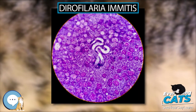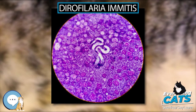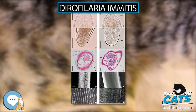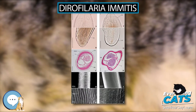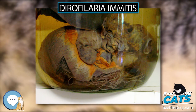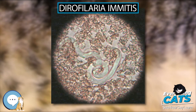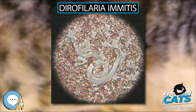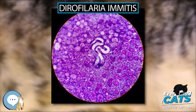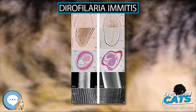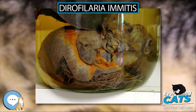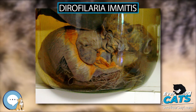Rarely, migrating heartworm larvae get lost and end up in aberrant sites such as the eye, brain, or an artery in the leg, resulting in unusual symptoms such as blindness, seizures, and lameness. Normally, until the larvae mature and congregate inside the heart, they produce no symptoms or signs of illness. Many dogs show little or no sign of infection even after the worms become adults — these animals usually have only a light infection and live a fairly sedentary lifestyle. However, active dogs and those with heavier infections may show the classic signs of heartworm disease.